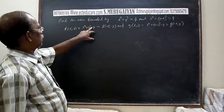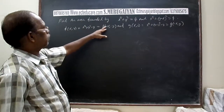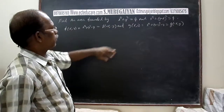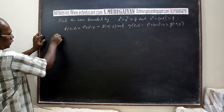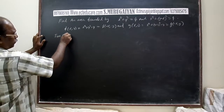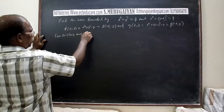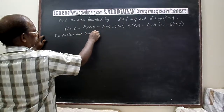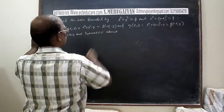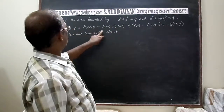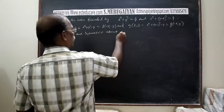Since x² + y² - 4 equals both f(x, y) and f(-x, y), from this discussion we can conclude that the two circles are symmetric about what is common — the substitution of -x — so symmetric about x = 0, the y-axis.